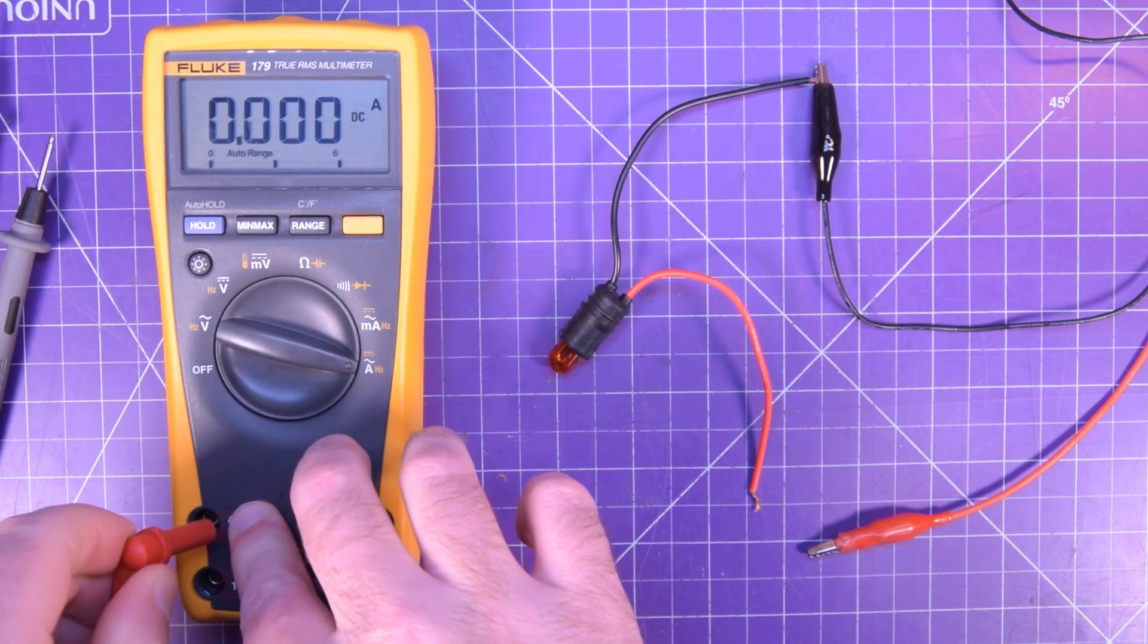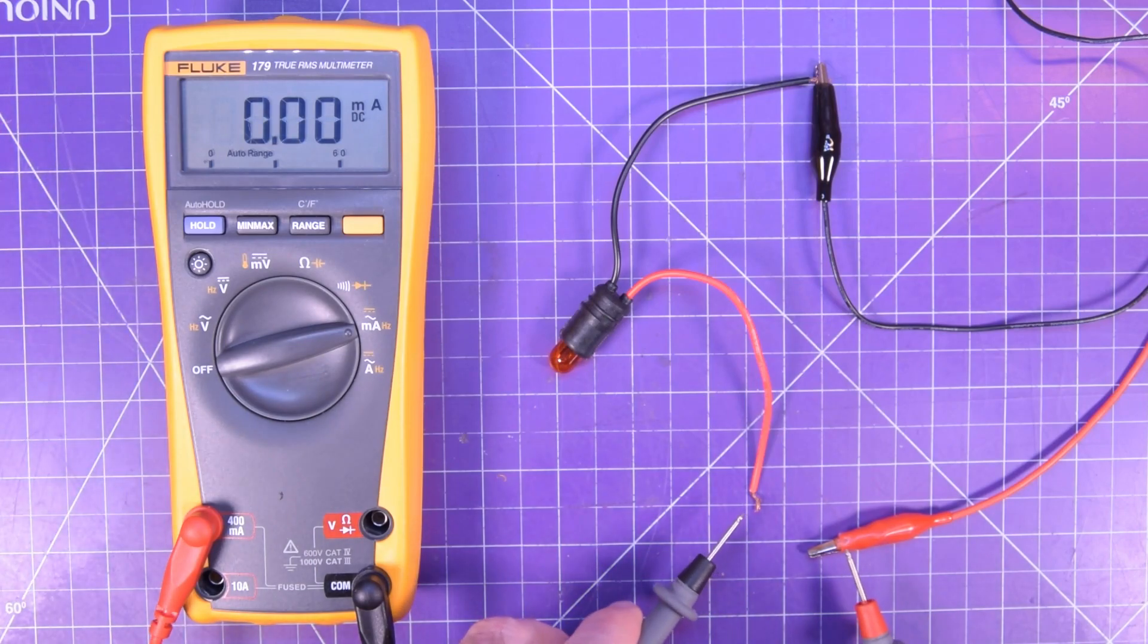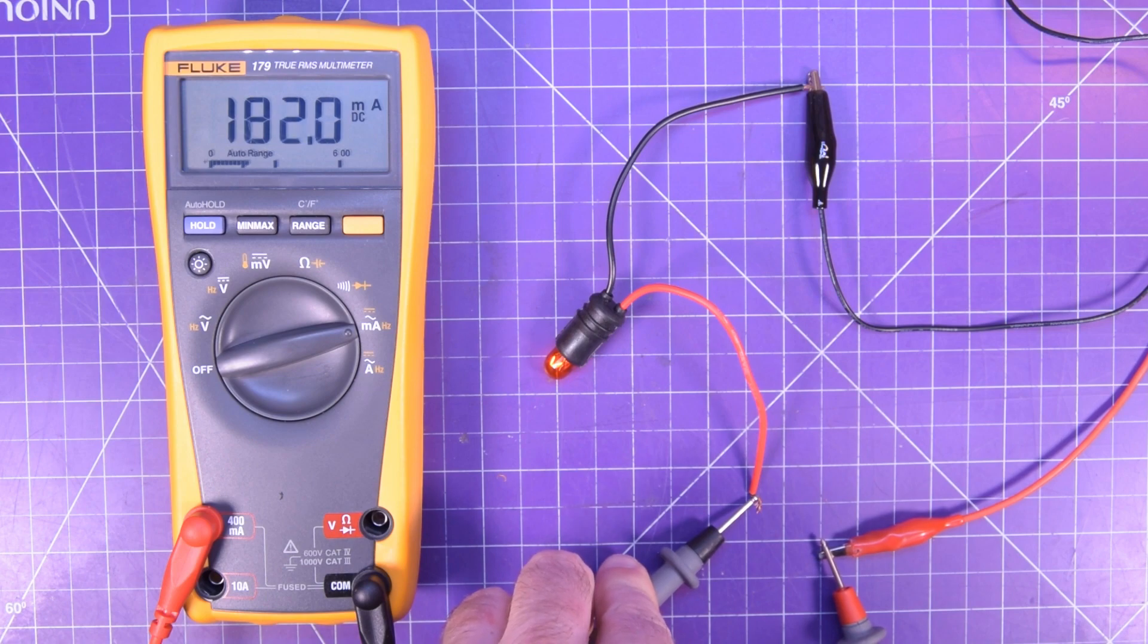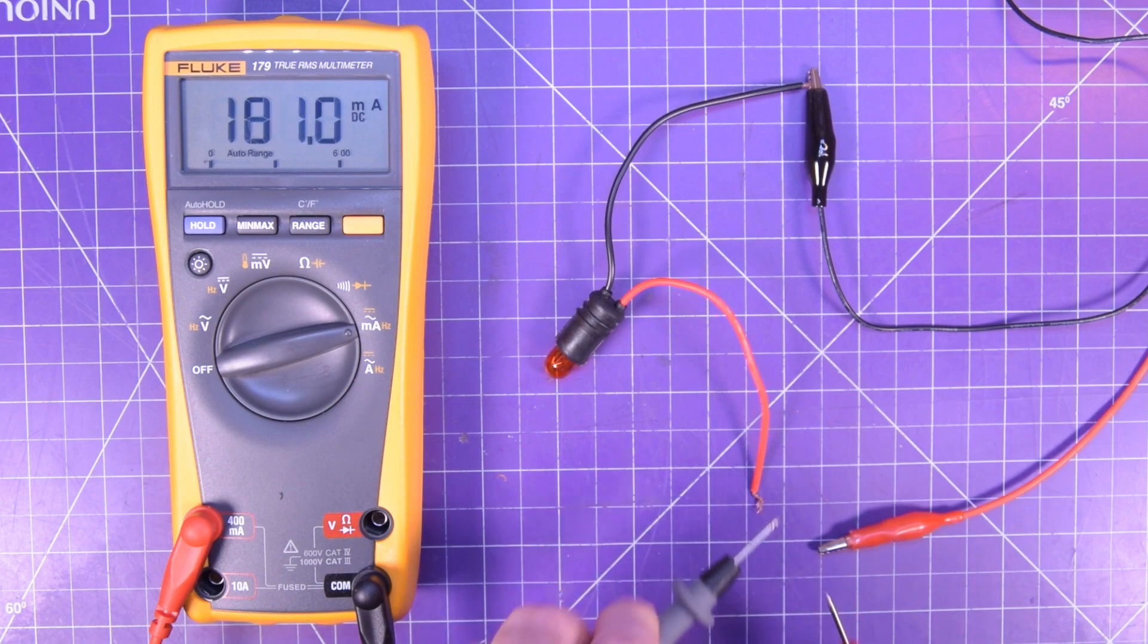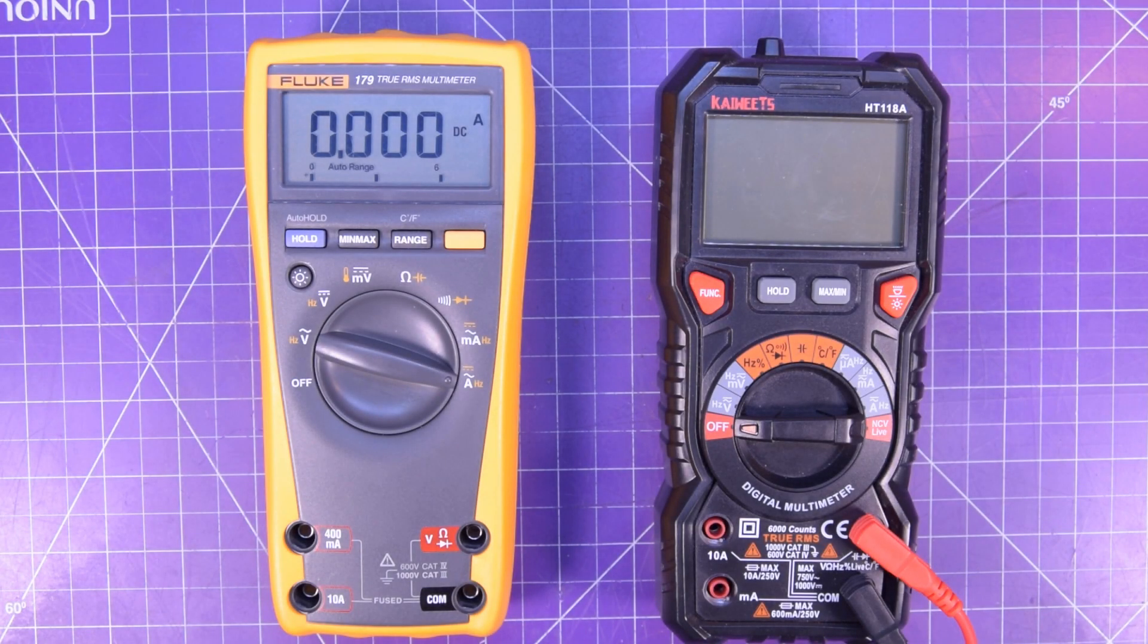And since I know the current is very small, I can get more resolution, more precision in this case, by moving the red lead onto the 400 milliamp jack and taking the measurement again. We get about 182 milliamps, and we even get a decimal point with an extra figure. Do you remember how I said you should take your leads out of your multimeter after you've done your current measurement? Well let me show you why.